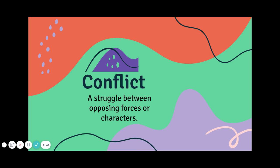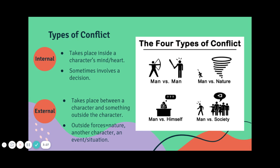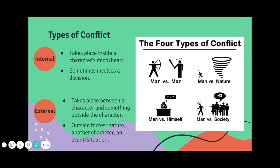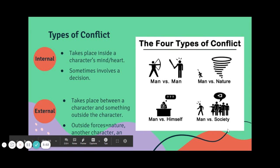Finally, we have our conflict. Remember, this is the struggle between opposing forces or characters. Sometimes that's internal, where we have character versus self-conflict — where you're trying to make a difficult decision. Or it can be external, which means it's against another character. So it could be character versus character, or character versus nature — that's anything when it's the character versus an animal, weather, or sickness. And then finally, character versus society — that is when a character is going against society or the norms.